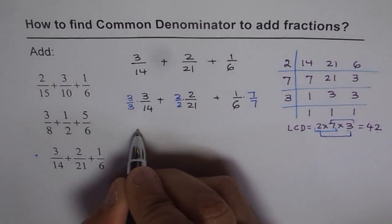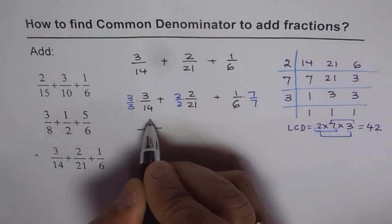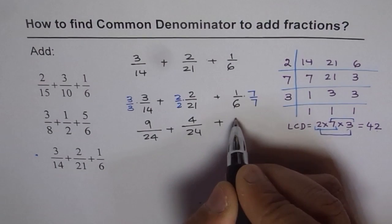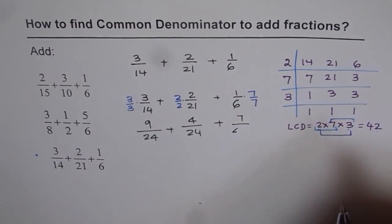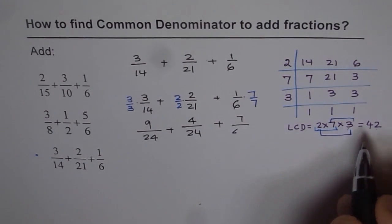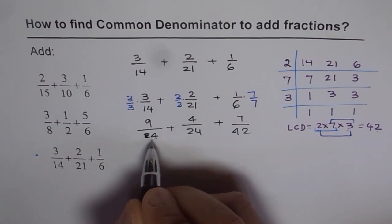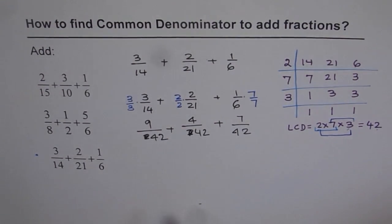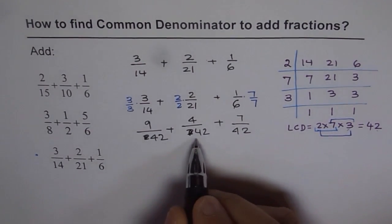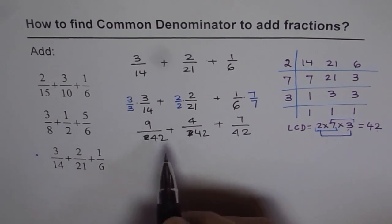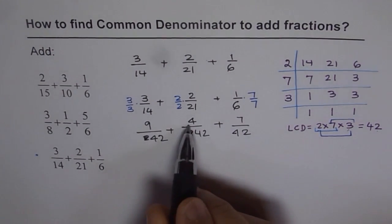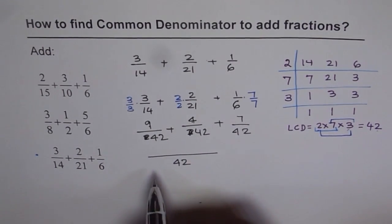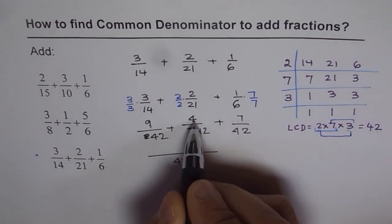The common denominator is 42 — not 24, sorry for the confusion. 3 times 14 gives 42, and 21 times 2 gives 42. Now that we have a common denominator, we can add the numerators. The numerators are: 3 times 3 equals 9, 2 times 2 equals 4, and 1 times 7 equals 7. So we get 9 plus 4 plus 7 over 42. 9 plus 4 is 13, and 13 plus 7 is 20.